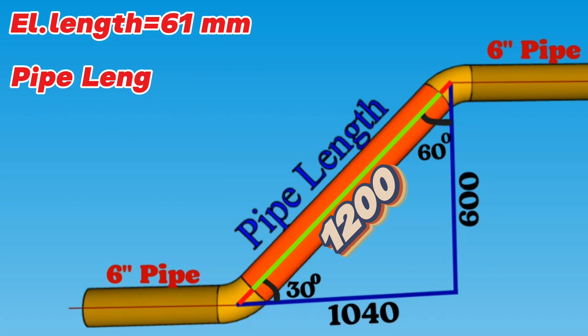So, pipe length will equal total length 1200 millimeters minus 2 times 6-inch 30-degree butt weld elbow dimension 61 millimeters and minus 2 times gaps for welding 3 millimeters.